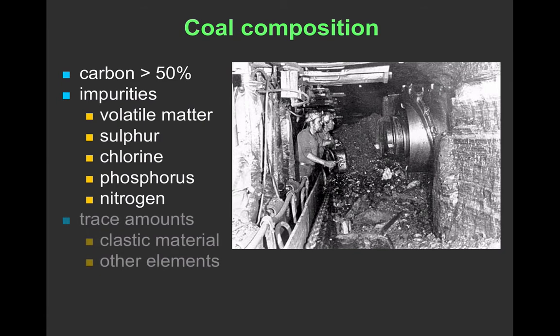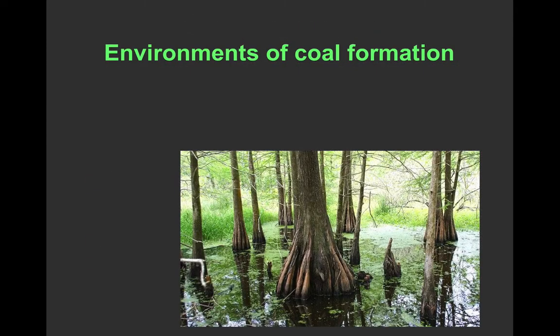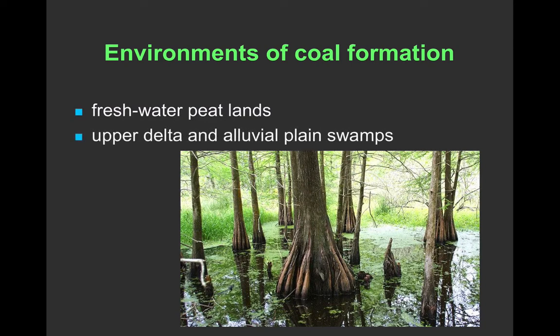In addition to this, there can be some other materials in there — clastic materials, fine-grained clays for example, and other elements that may have been incorporated during deposition. Coal forms in very particular sedimentary environments. It could be in freshwater peatlands, very often in deltaic and alluvial plain swamps — perhaps like the picture shown here — in marshes or in bogs.